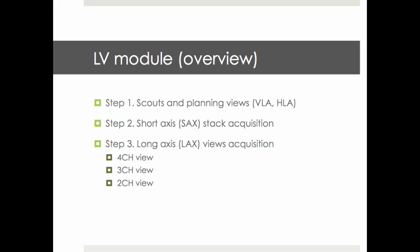The LV module is acquired in three steps. In step 1, we obtain scouts and planning views such as vertical and horizontal long axis. In step 2, we focus on acquisition of a short axis stack. In step 3, we acquire true long axis views, that is 4-chamber views.